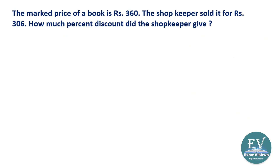Let's look at the second situation. The marked price of a book is 360 rupees — a big class guide or reference book. The shopkeeper sold it for 306 rupees. How much percent discount did the shopkeeper give?